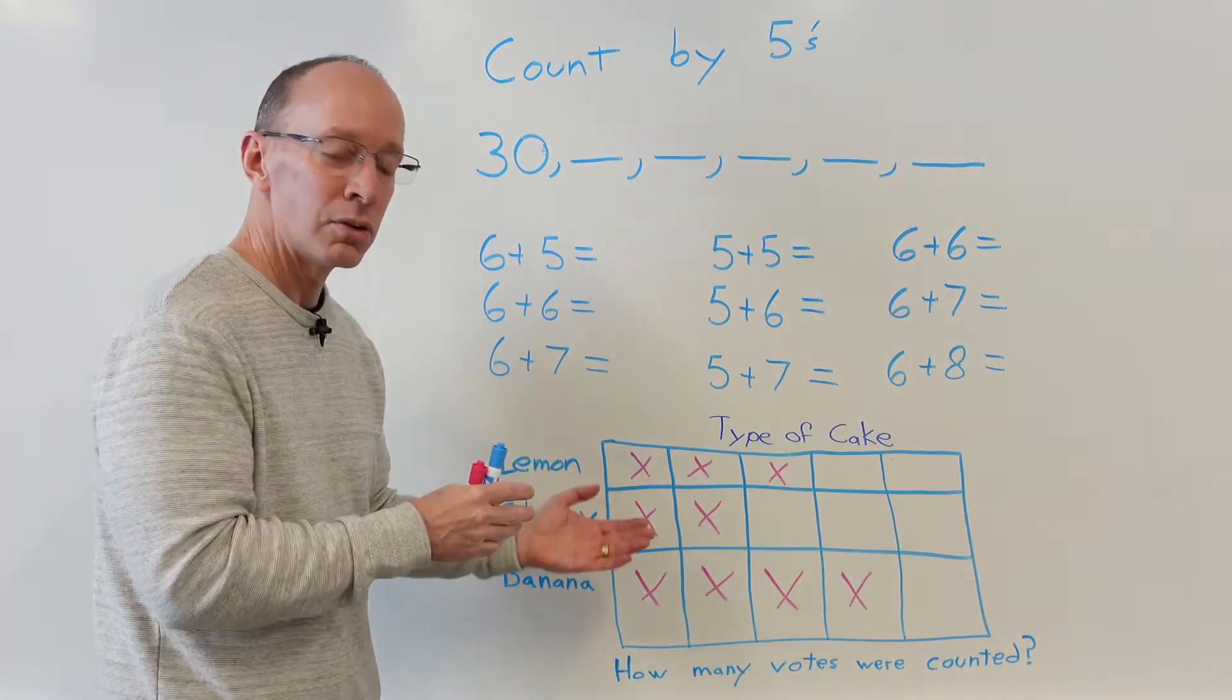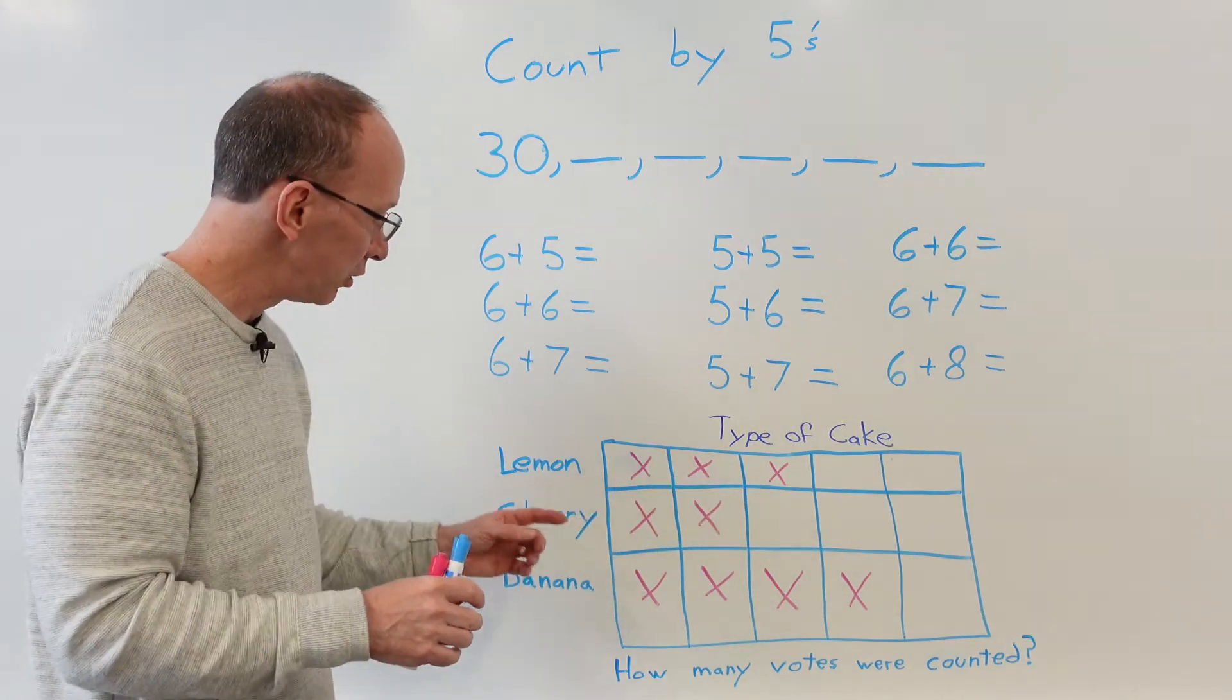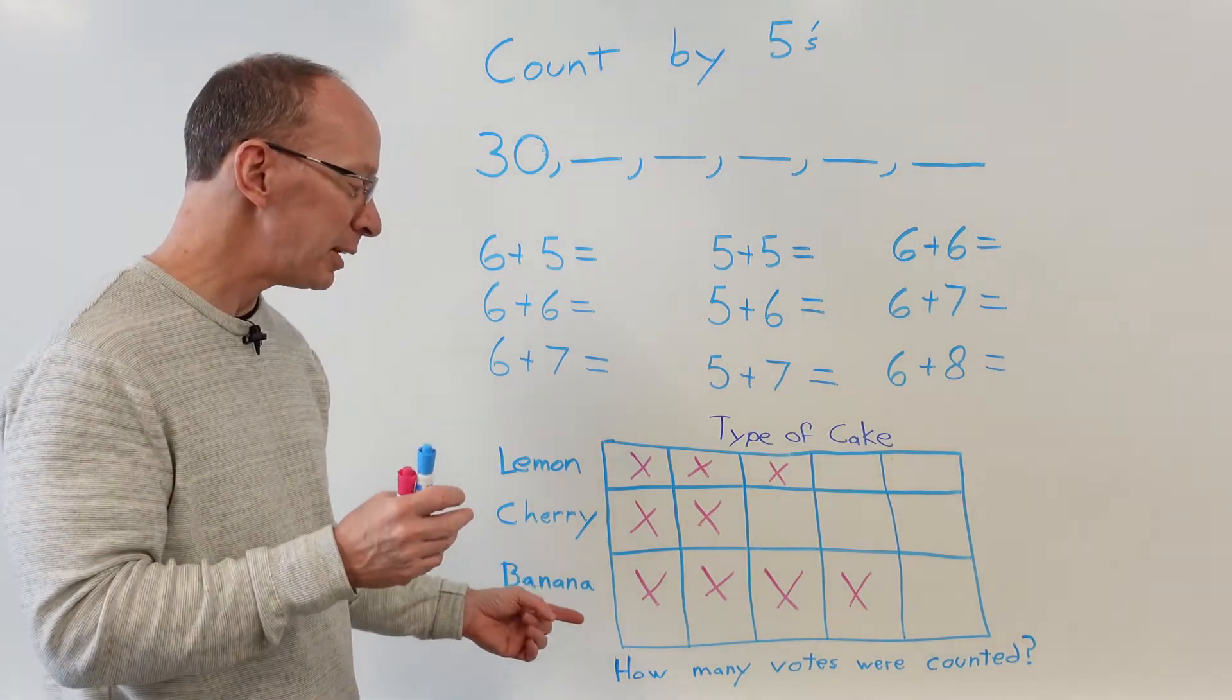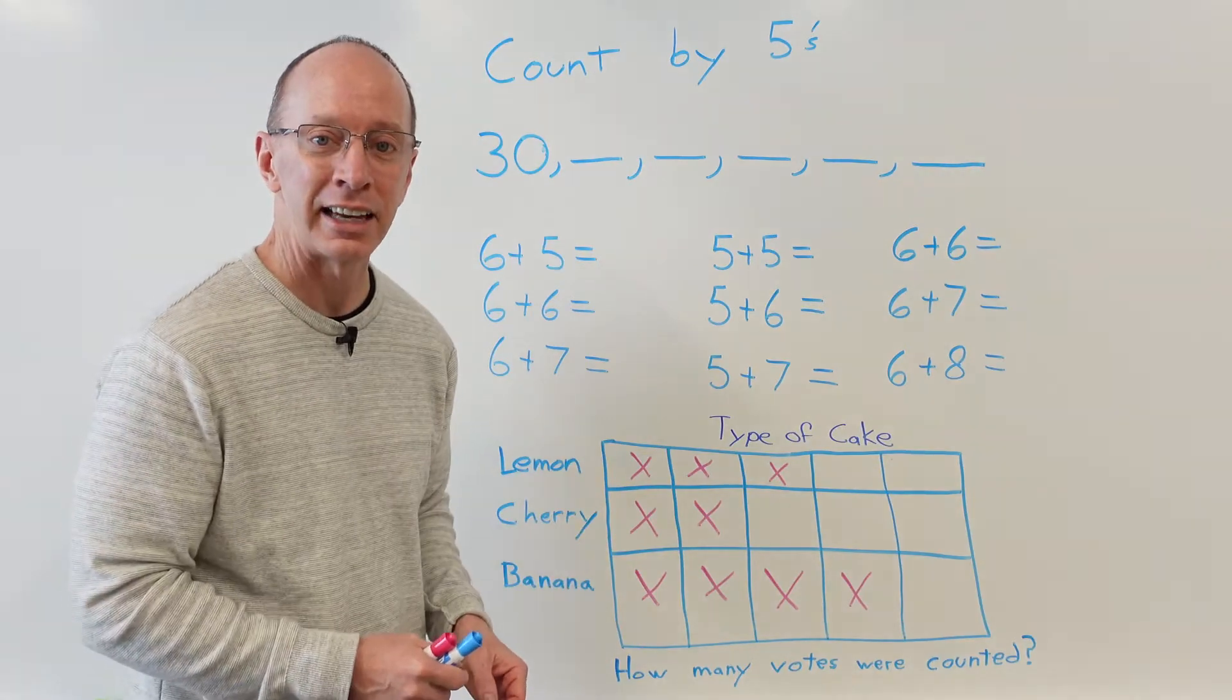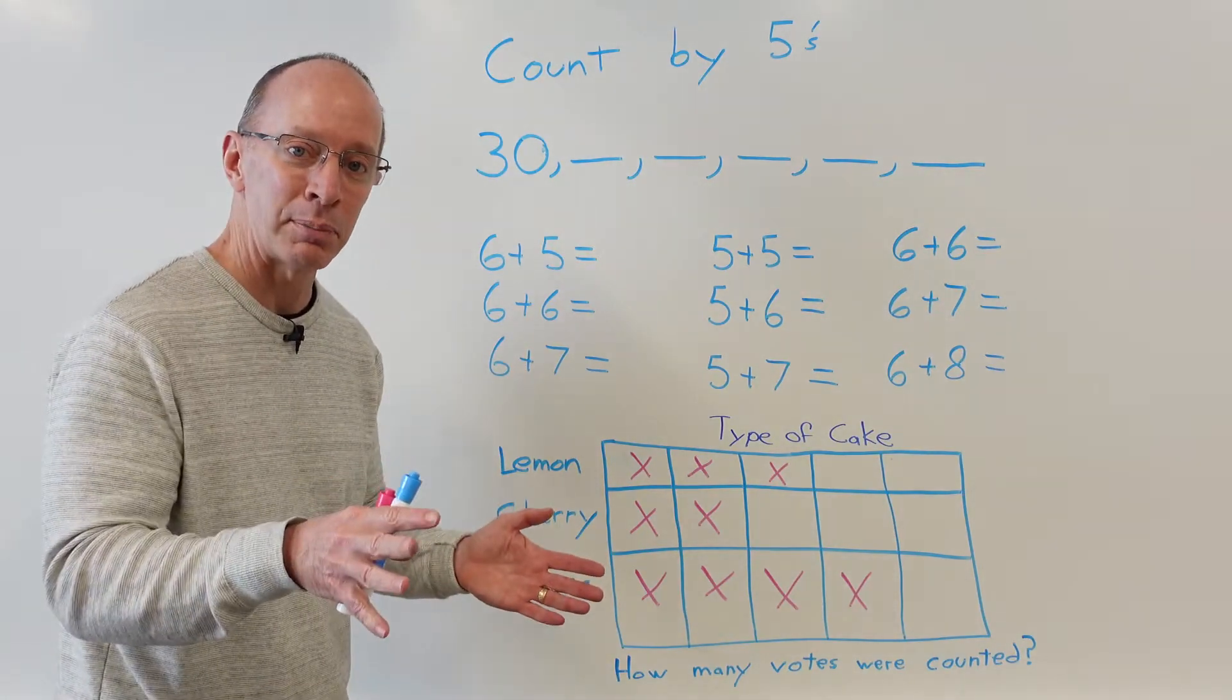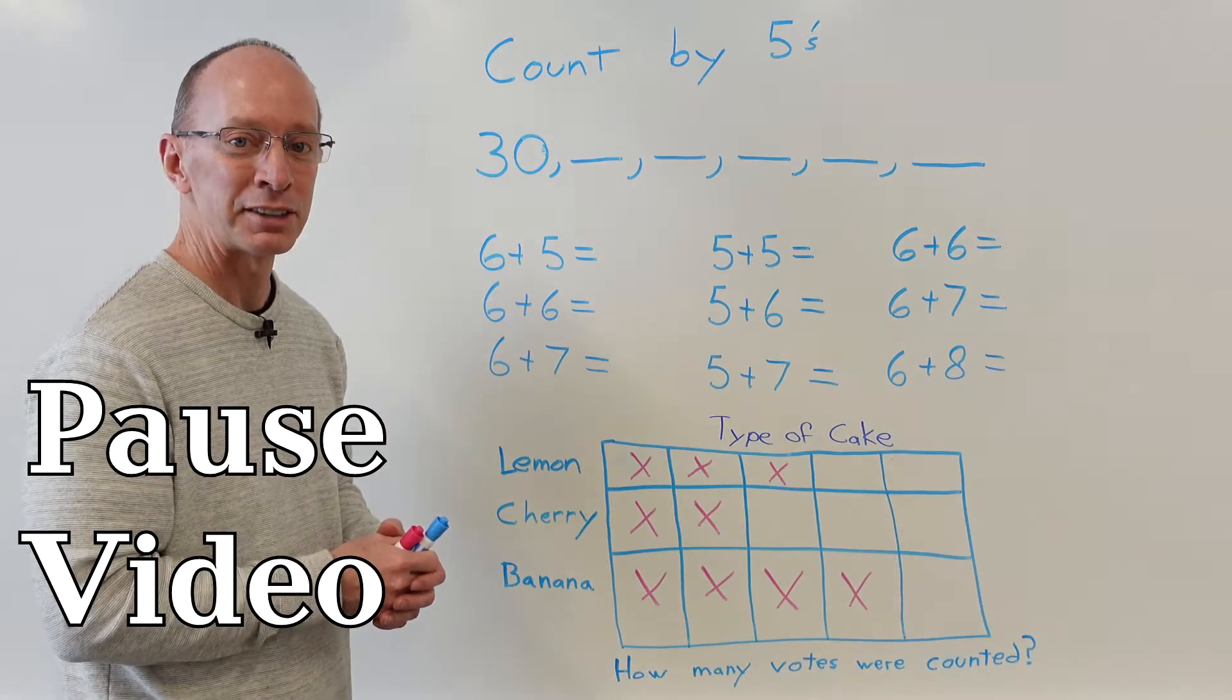And then you will have a graphing exercise and these are types of cake - you have a lemon cake, a cherry cake, and a banana cake. What I want you to do is how many votes were counted in all of the votes on these cakes. So right now go ahead and hit pause and go ahead and fill this out on a piece of paper, and when you're done with that we'll give you the answers. All right, hit pause.